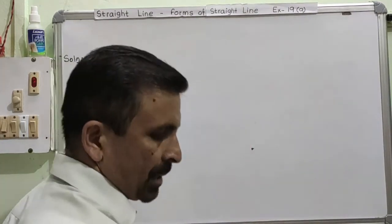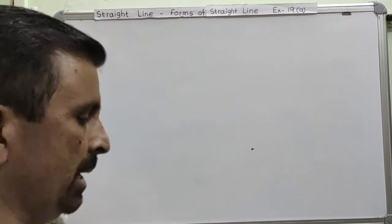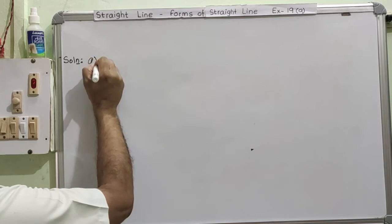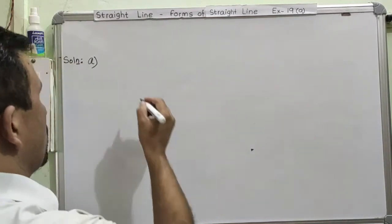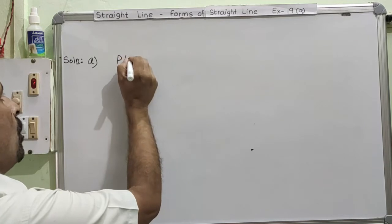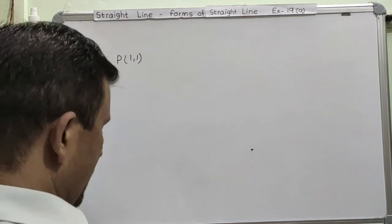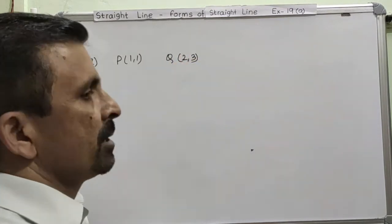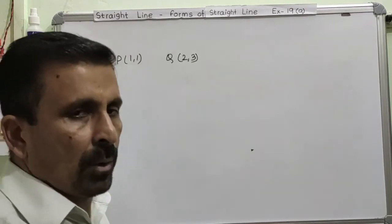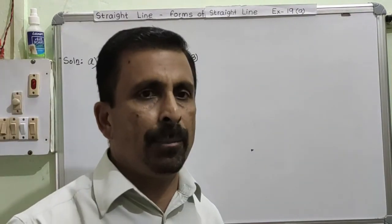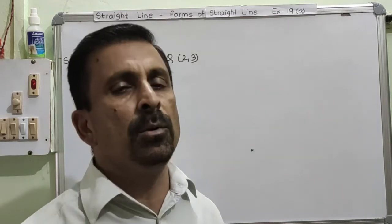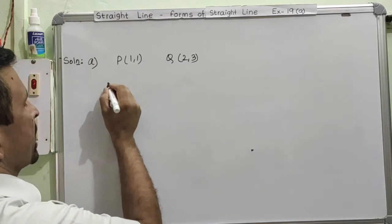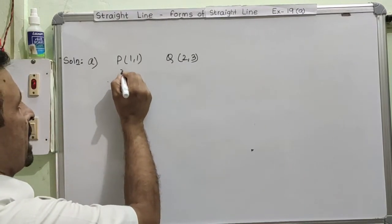In question number 9, part A, we are given the coordinates of two points. Point P is (1, 1) and point Q is (2, 3). Since we have the coordinates of two points, we will write down the equation first and then find the slope. We will use the two-point form, with (1, 1) as (x1, y1) and (2, 3) as (x2, y2).